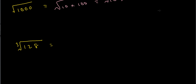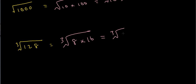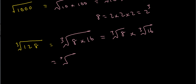Now let's try to find the cube root of 128. I know that 8 times 16 is 128, so this is the same as the cube root of 8 times 16. Equivalently, that's the cube root of 8 times the cube root of 16. The cube root of 8 is 2, because 8 is 2 times 2 times 2, or 2 cubed. So this is the cube root of 2 cubed times the cube root of 16. Since the cube root of anything cubed is just that number — we're cubing then taking the cube root, undoing what we've done — this becomes 2 times the cube root of 16.